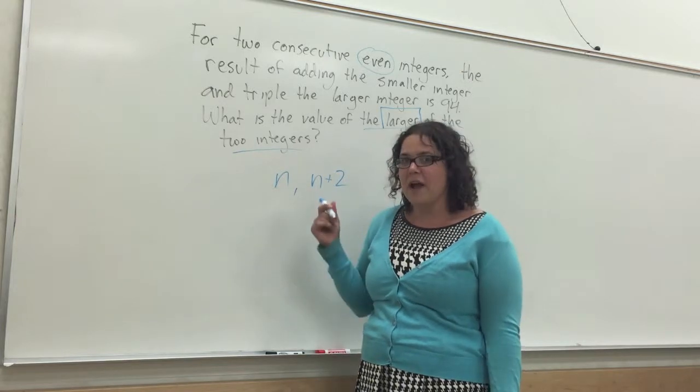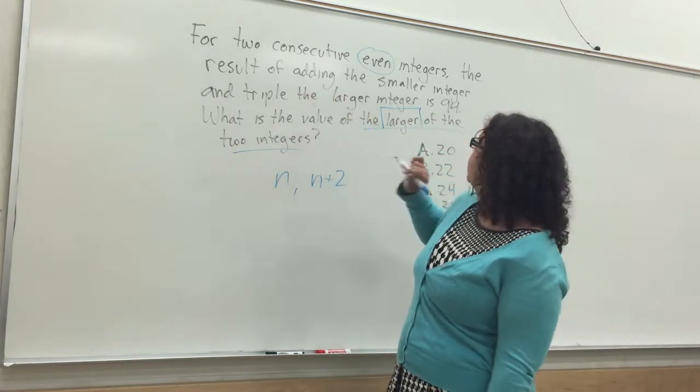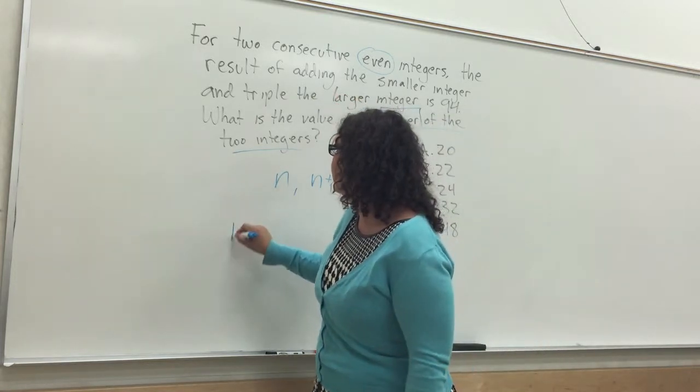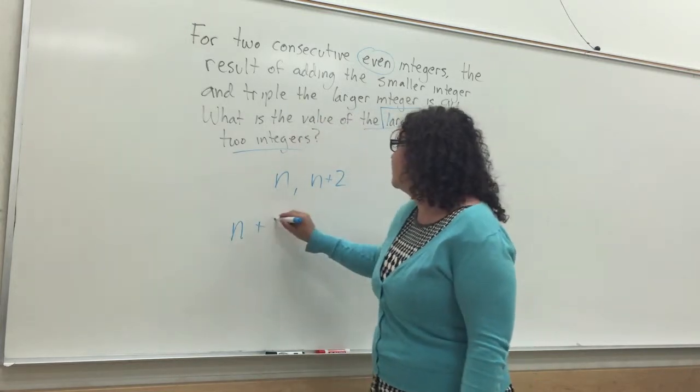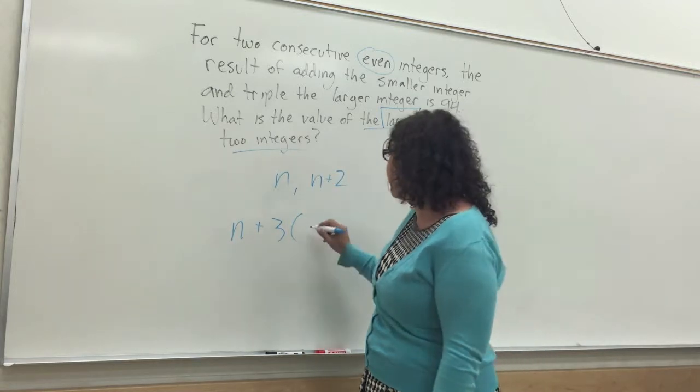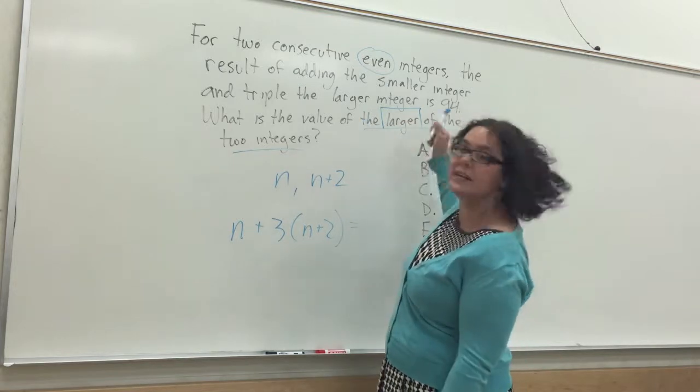Now we just have to go ahead and write them into the word problem. The result, so we're looking for a sum of adding the smaller integer, that's our n, and triple the larger integer. So three times, don't forget your parentheses or else you'll forget to distribute the three, n plus 2. That result they promised us, 94.